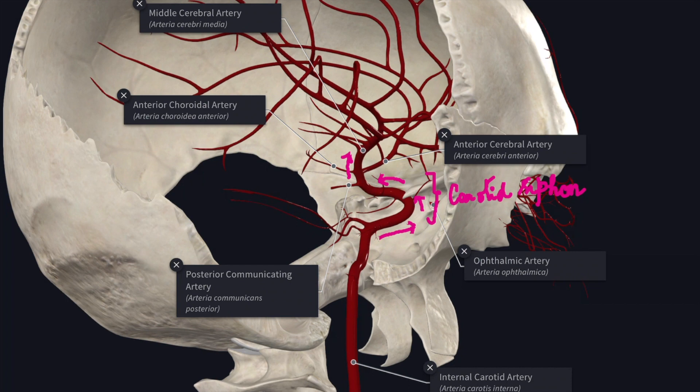Next we'll see what is the carotid siphon. The intra-cavernous and supra-cavernous course of the internal carotid artery forms a U-shaped bend, a hairpin bend with the convexity forward, which is called the carotid siphon. This siphon dampens the arterial pulsation to provide a more steady, regular stream of blood flow to the brain. The carotid siphon is an important part of the cerebral angiogram to inspect for masses in the pituitary region, which will widen the curl in the artery.